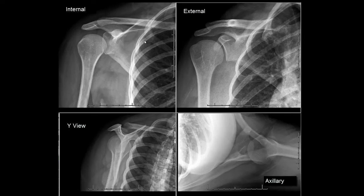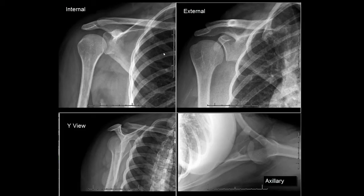Here is a projection of the shoulder in internal rotation. We're going to describe this appearance of the humerus as a light bulb-like configuration. Here is the glenoid of the scapula, the coracoid process, the clavicle and the acromion, and of course the rib cage where you'll check the lungs to make sure there's no pneumothorax.